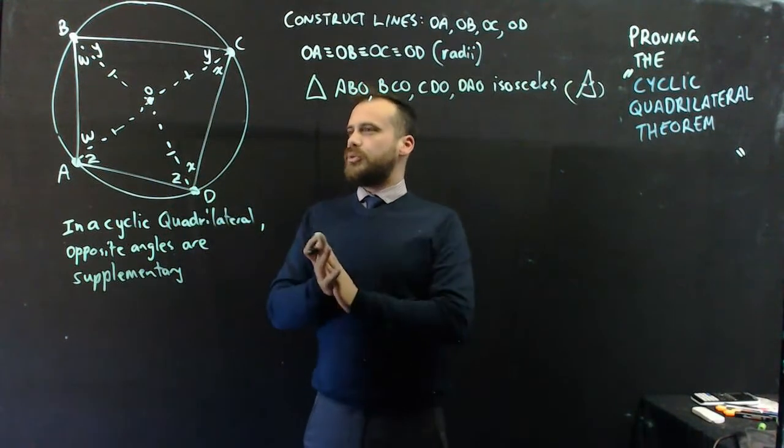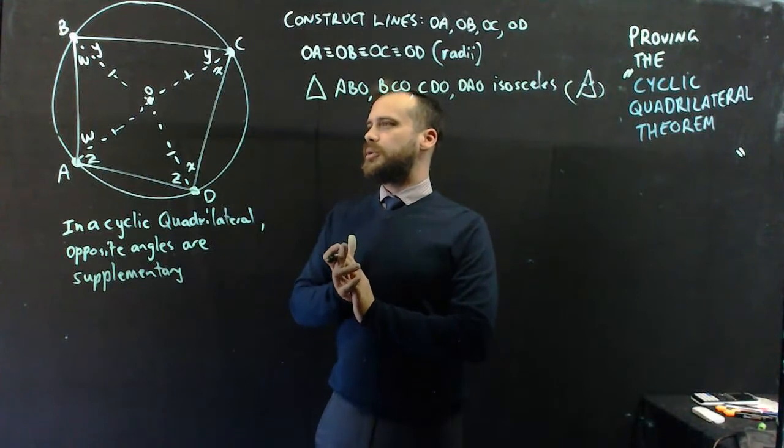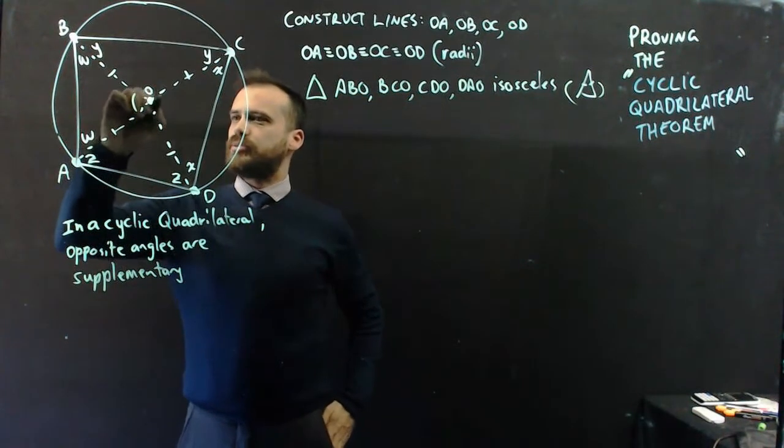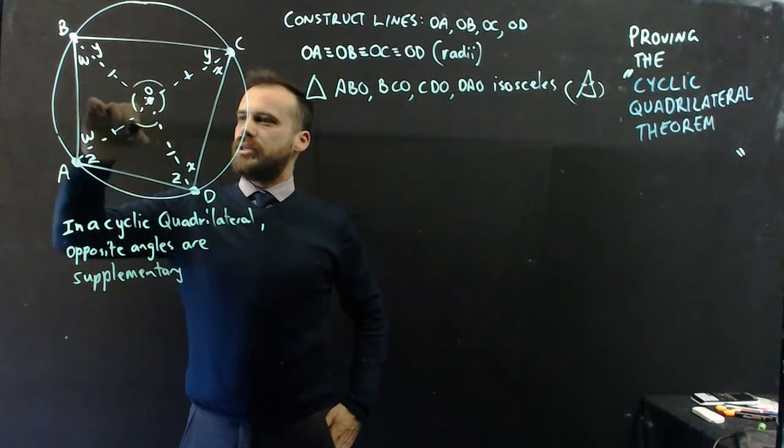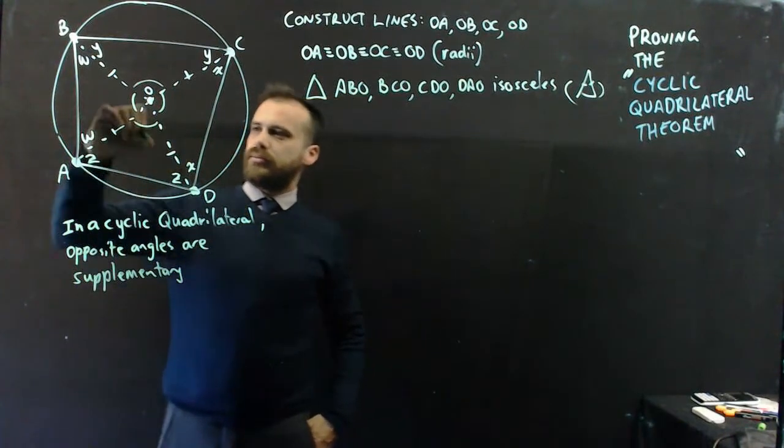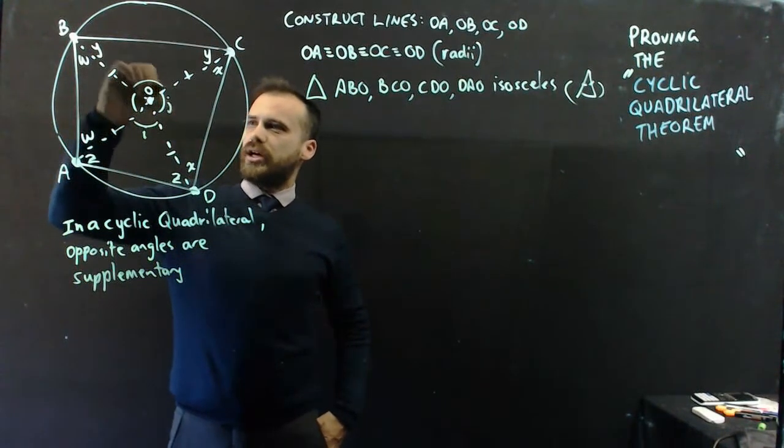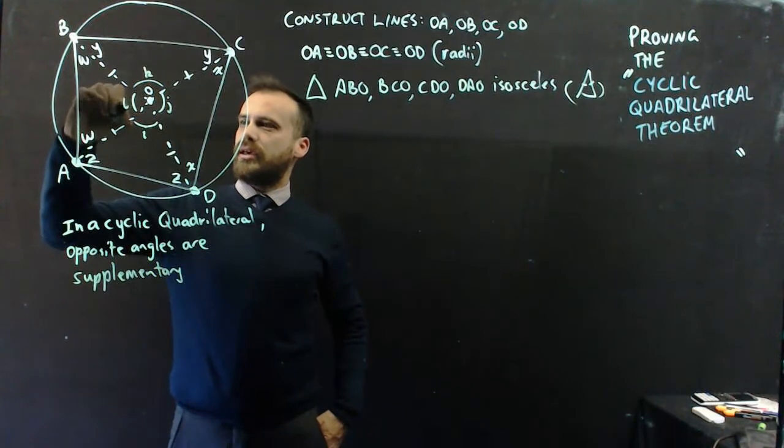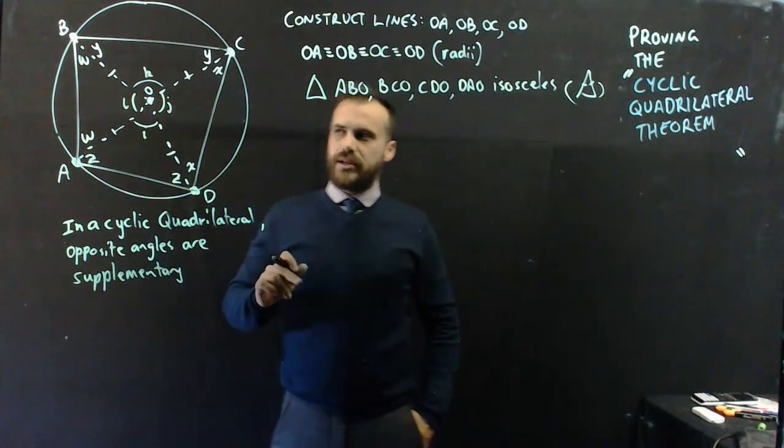All right, so from here, what can we do? Well, I've got some other angles here which I can explore. These ones here, and let's call them I, J, K, and L. So that gives me four angles there.